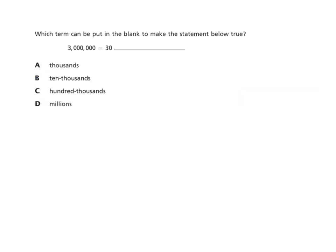Okay, this is not a difficult problem, but a lot of people just jump to conclusions. Again, not writing things out, one of my pet peeves. But let's go through it. Which term can be put in the blank to make the statement below true? So we have 3 million. Notice that we have six zeros right there. Is the same as 30 what? Well, we have 30 thousandths. I'm going to write this in standard form. We have ten thousandths. I need another zero there. I have one hundred thousandths. And I have millions. Well, it's really easy to eliminate the first one, D, because three millions is not the same as 30 millions. So that one's eliminated.